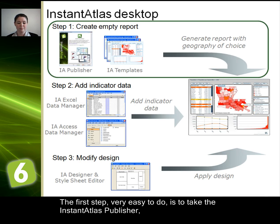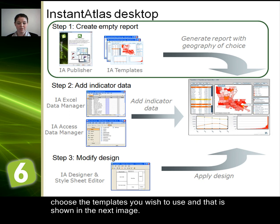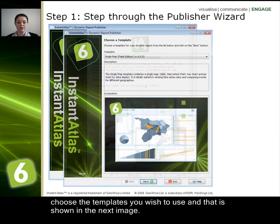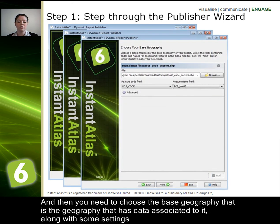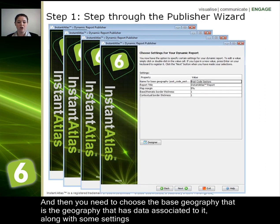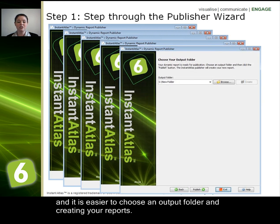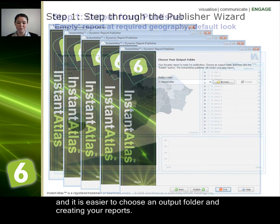The first step — very easy to do — is to take the Instant Atlas Publisher, choose the template that you're wishing to use, as shown in this next image. Then you'll need to choose the base geography, that's the geography that has the data associated to it, along with some settings. And it's as easy as choosing an output folder and creating your report.